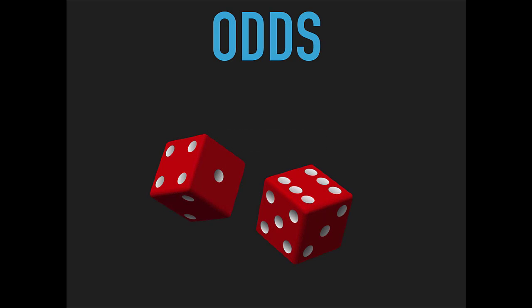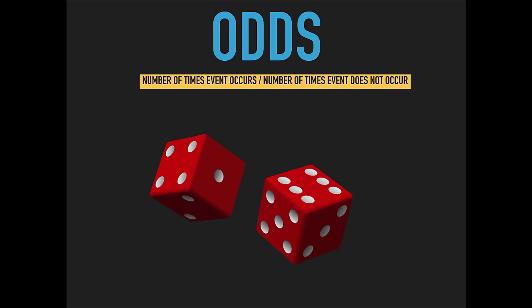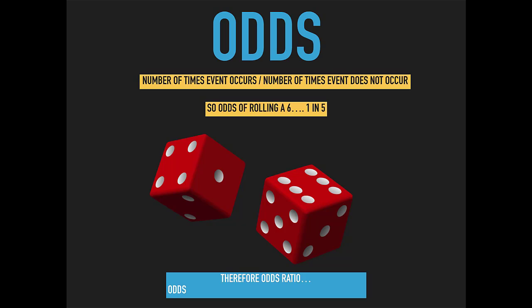The odds is the chance of an event occurring — it is the ratio of the number of times an event is likely to occur divided by the number of times it is likely not to occur. For example, if you're rolling a dice, the odds of rolling a 6 is 1 and the odds of not rolling a 6 is 5, giving you 1 in 5. Therefore, the odds ratio is the odds of the outcome in the experimental group divided by the odds in the control group.